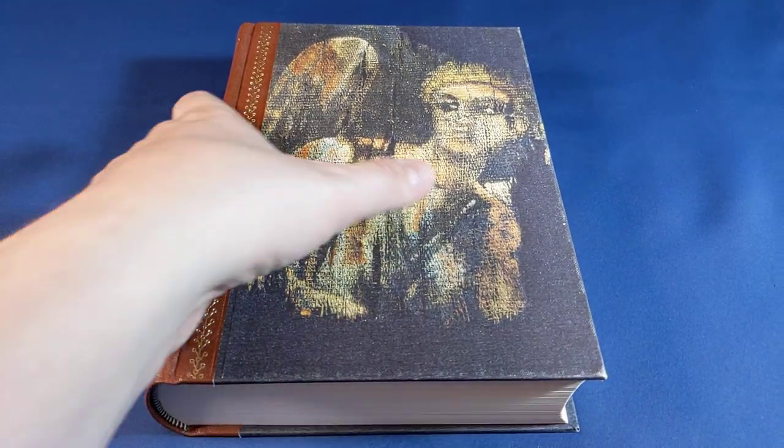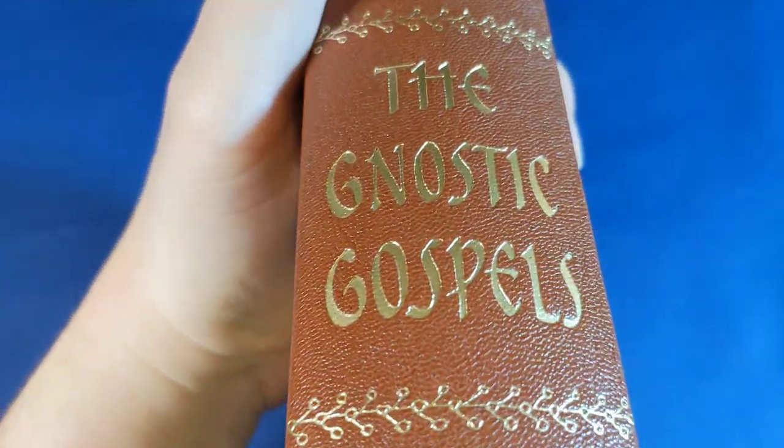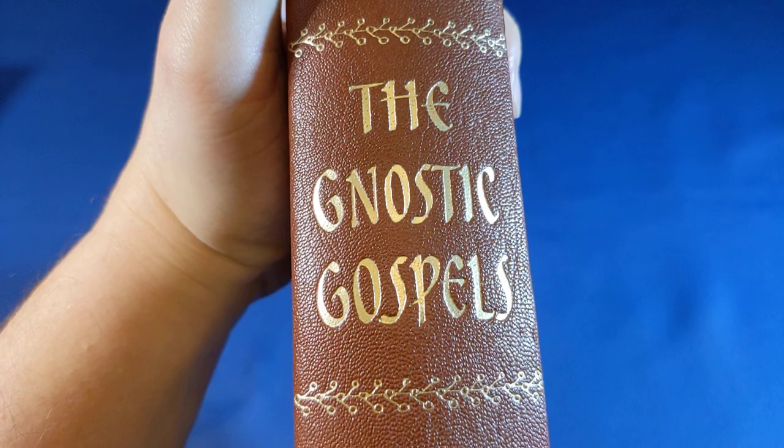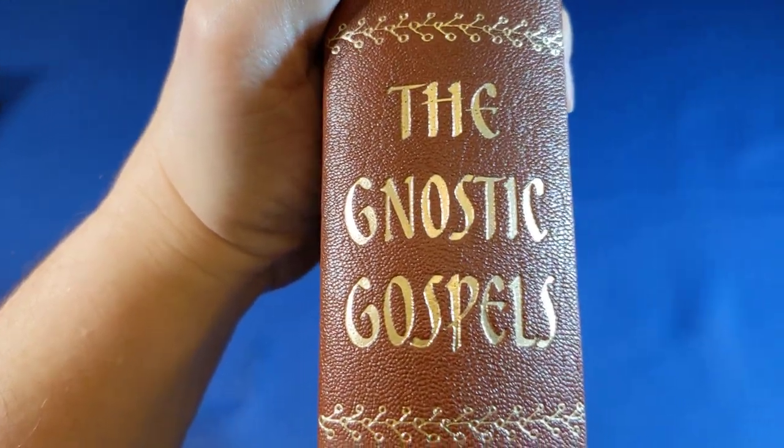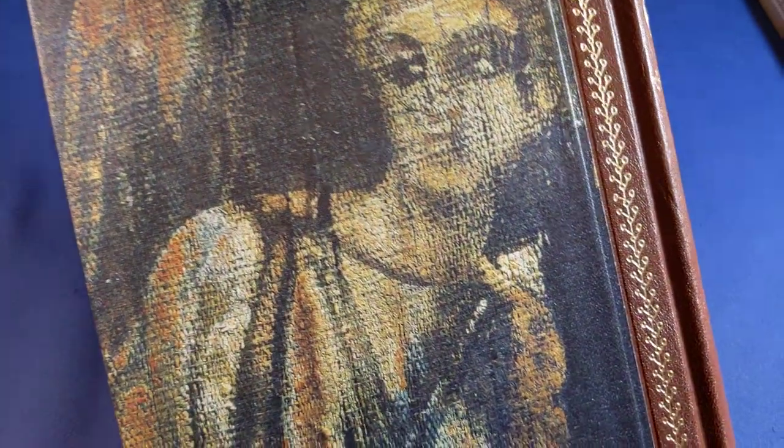The Gnostic Gospels. This is the Folio Society edition. I was looking for a nice hardcover edition of the books, the translations of the texts discovered in Nag Hammadi in 1945, known as the Nag Hammadi Library.